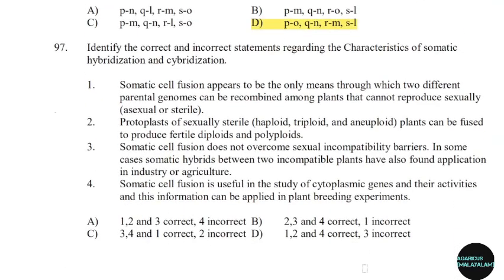97th question: Identify the correct and incorrect statements regarding the characteristics of somatic hybridization and hybridization. Correct answer: Option D.